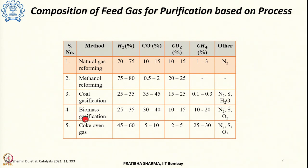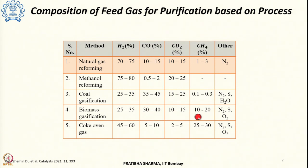Similarly, from biomass gasification, the hydrogen content is lower at 25 to 35%, 30 to 40% is carbon monoxide, 10 to 15% is carbon dioxide, and 10 to 20% is methane which is remaining, then nitrogen, sulphur and oxygen.